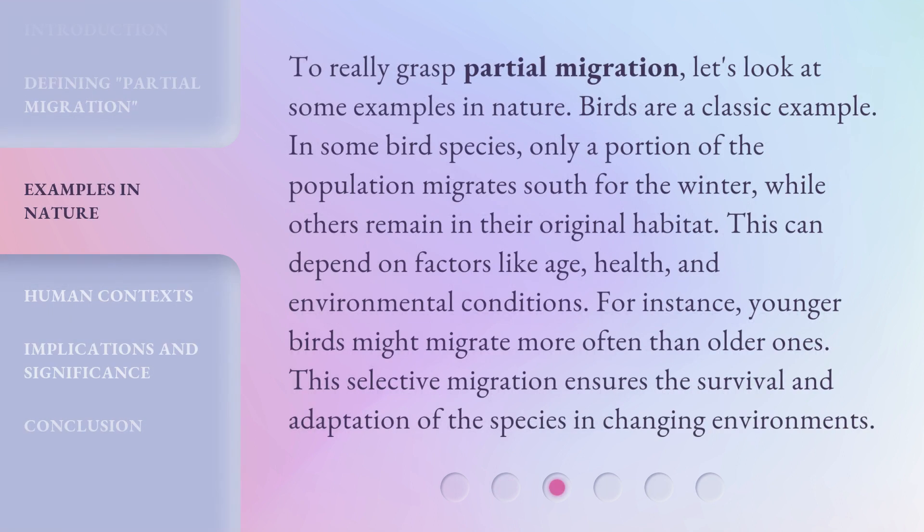To really grasp partial migration, let's look at some examples in nature. Birds are a classic example. In some bird species, only a portion of the population migrates south for the winter, while others remain in their original habitat. This can depend on factors like age, health, and environmental conditions. For instance, younger birds might migrate more often than older ones. This selective migration ensures the survival and adaptation of the species in changing environments.